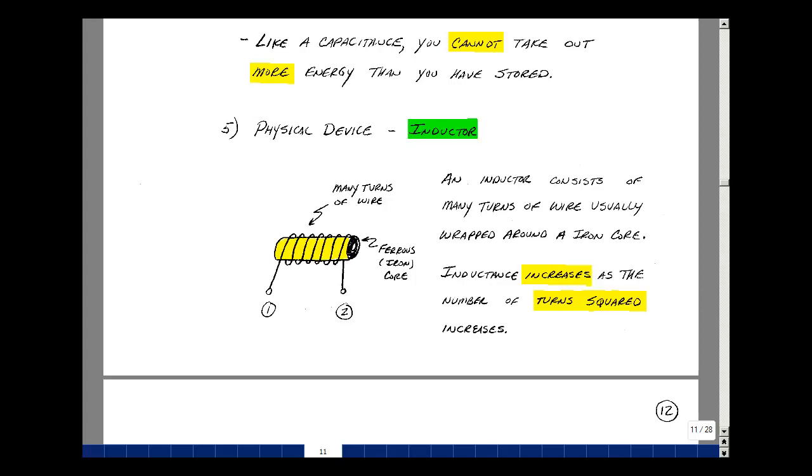Our previous elements of resistance and capacitance had the actual device as a resistor and a capacitor. The same would be true for inductance. The actual device would be called an inductor. The OR ending indicates it's the physical device. The ANCE ending indicates the idealized concept.